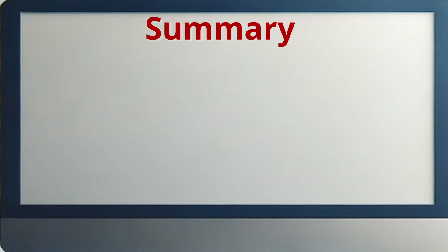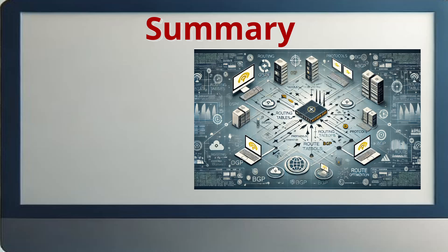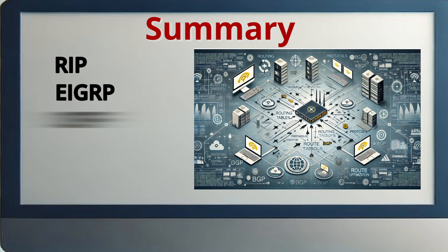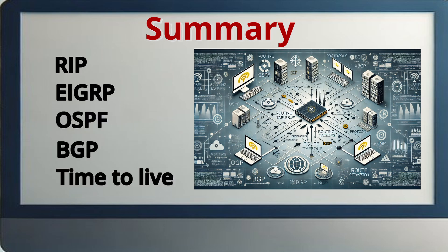That's it for this lesson. We reviewed some commonly used routing protocols that include RIP, EIGRP, OSPF, and BGP. Then we touched on how we can use Time to Live and traffic shaping techniques to see how our network is functioning and control it where needed.